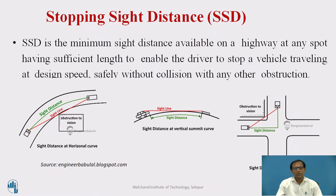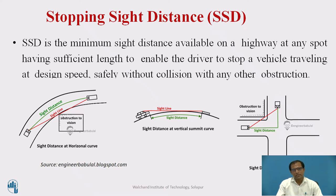Before we go into the analysis, let us understand what is stopping sight distance. It is the minimum sight distance available on a highway at any spot, having a sufficient length to enable the driver to stop the vehicle traveling at a design speed safely without any collision with any other obstruction.